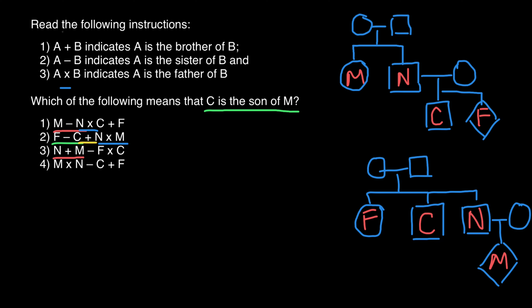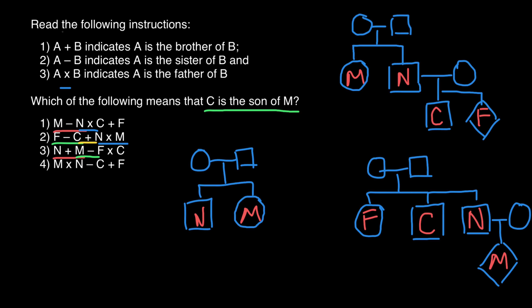Now let's check option three. N plus M: the plus sign means the first is a brother of the second, so N is a brother of M. We put M here; we don't know the gender yet, but they should have parents. Next, M minus F means the first is a sister of the second, so M is a sister of F — M is female. We put F here. Then F times C means the first is a father of the second, so F is a father of C. We don't know the gender of C.